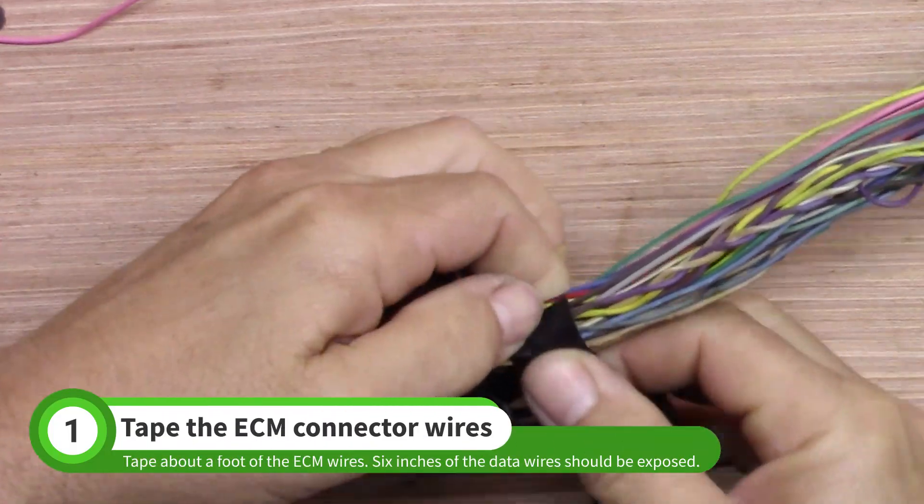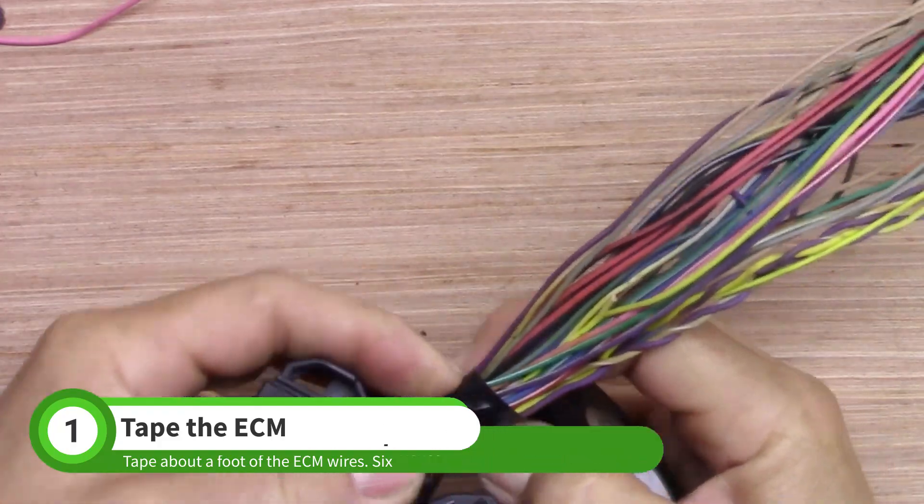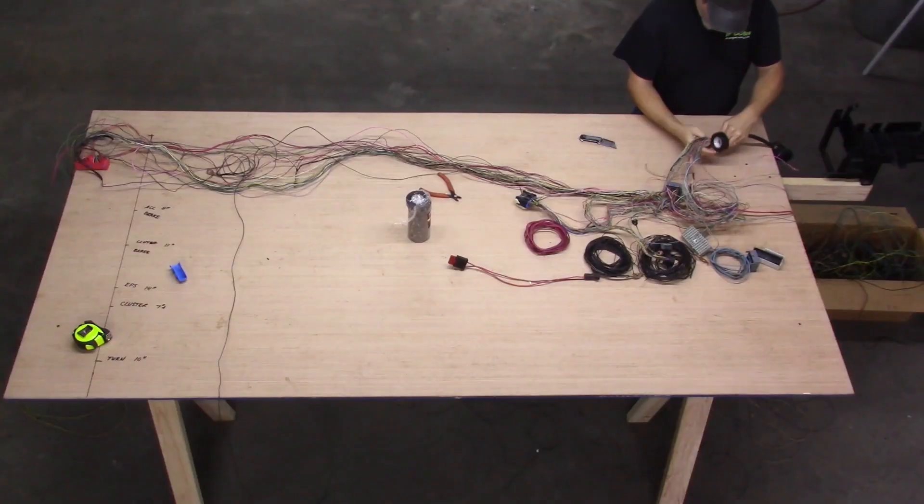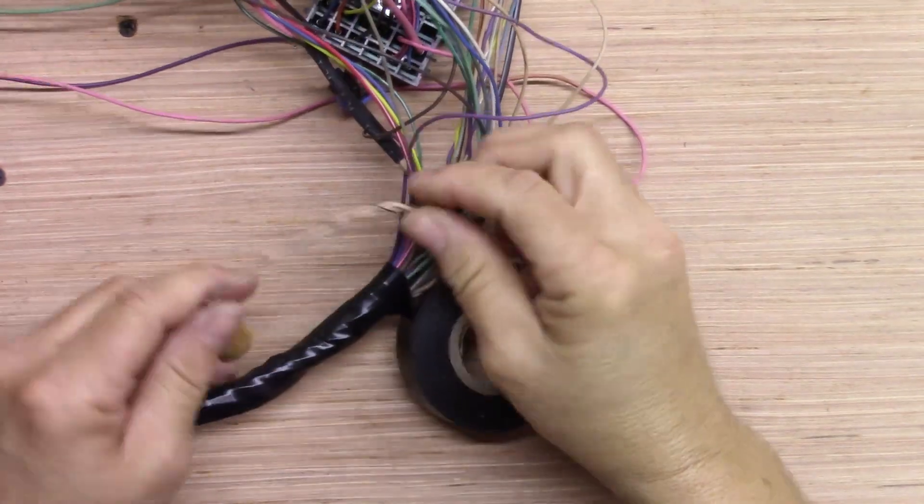First up is the ECM connector. Tape a little over a foot of the wires leading to this connector. You should have about 6 inches of twisted tan wire exposed past the tape.